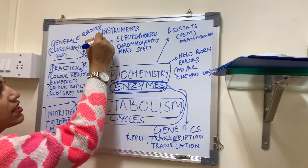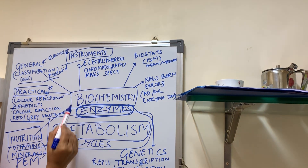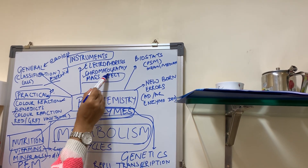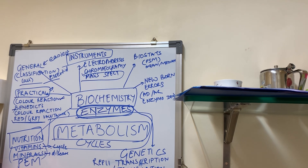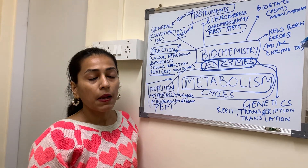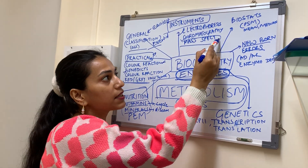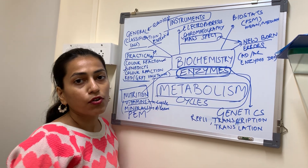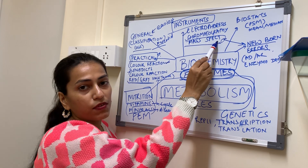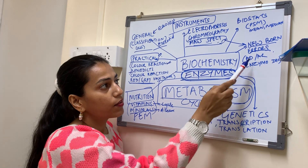Instrumentation is also a weak point for most students. Mostly focus on electrophoresis and chromatography. The other recent technology is mass spectrometry. You get questions from inborn errors of metabolism, and mass spectrometry is the primary investigation for inborn errors of metabolism — it is diagnosed only on the basis of this instrument. So you should know at least a little about mass spectrometry.